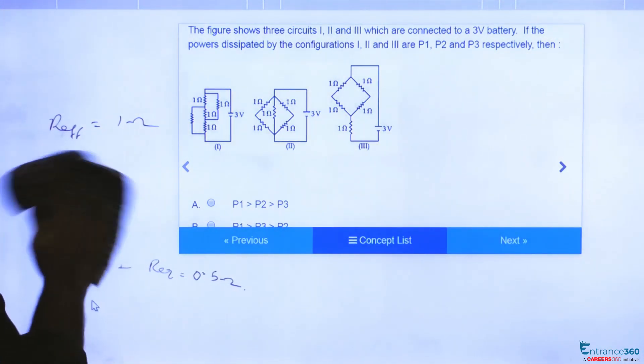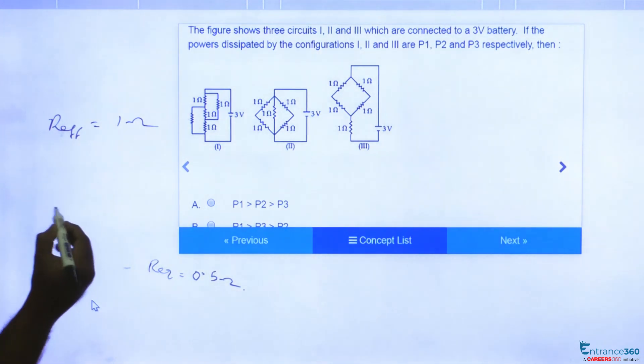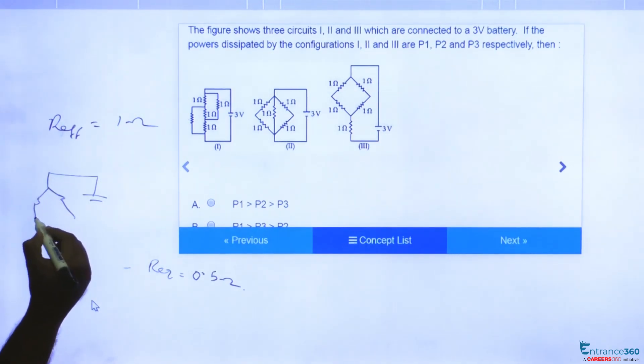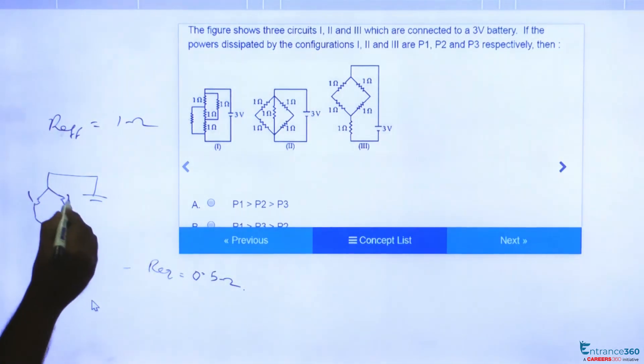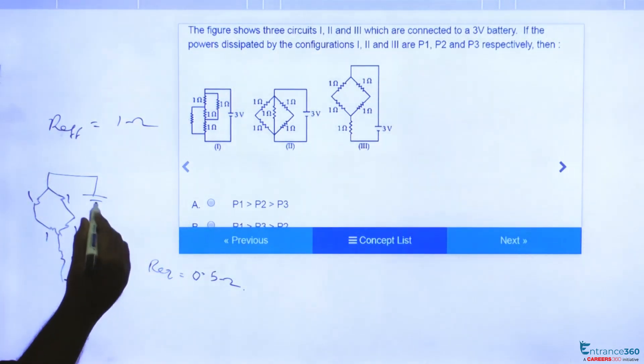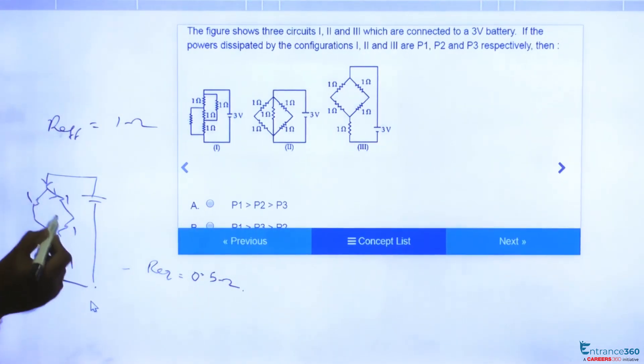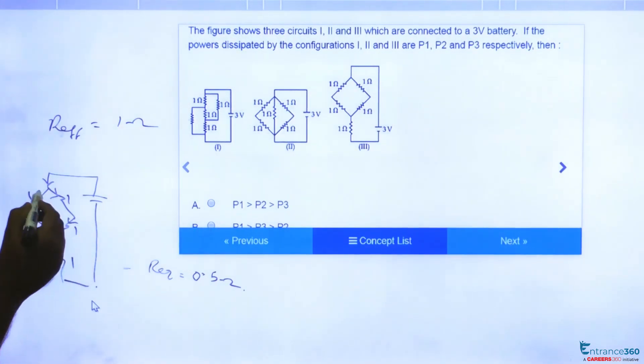Now let's see the third circuit. In third circuit, here 3 volt battery connected like this, each is one ohm. Current will come here, split here. Same current will flow through these two resistances. Similarly here also same current will flow through these two resistances. And these two branches are parallel.